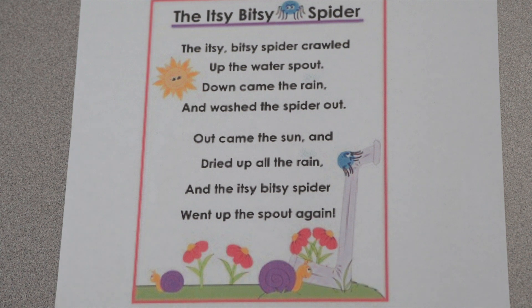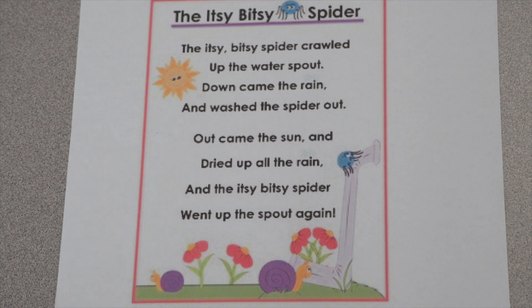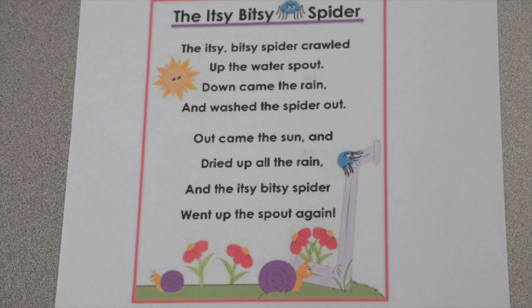Because we know this poem, I have a feeling you guys already know the tune it's usually sung to. So we're going to go ahead and read this poem, and I want you to do it like you learned it, which should sound like a song. At home, go ahead and sing this poem along with me. The Itsy Bitsy Spider crawled up the water spout. Down came the rain and washed the spider out. Out came the sun and dried up all the rain. And the Itsy Bitsy Spider went up the spout again.